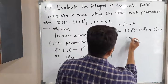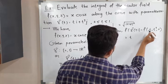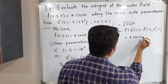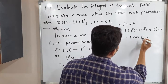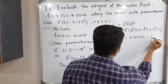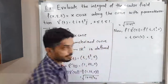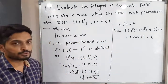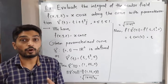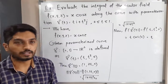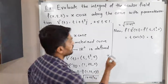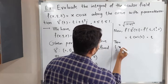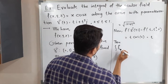So x = t and z = 0, giving us t·cos(0). Since cos(0) = 1, we have f(γ(t)) = t. We have now calculated both ||γ'(t)|| = √(1 + 4t²) and f(γ(t)) = t.